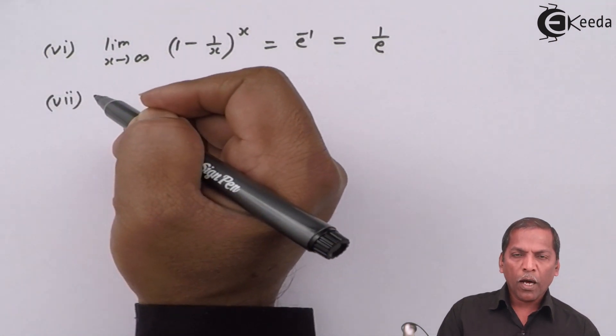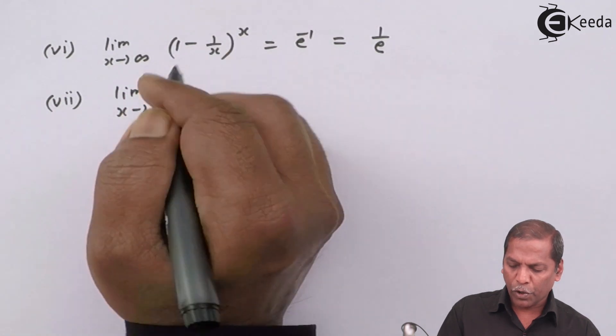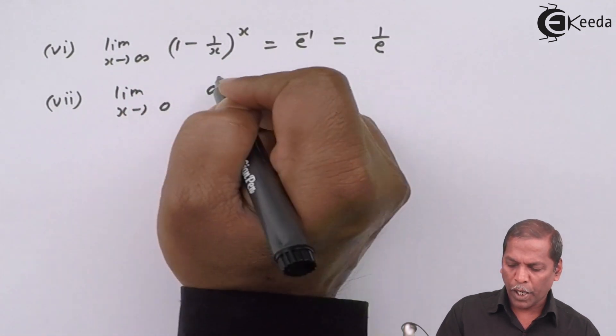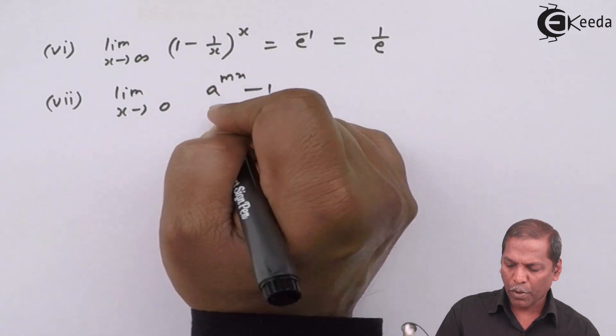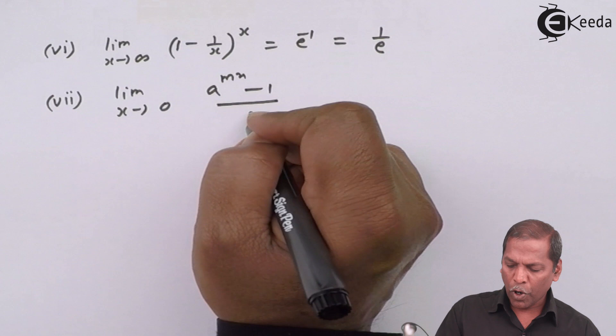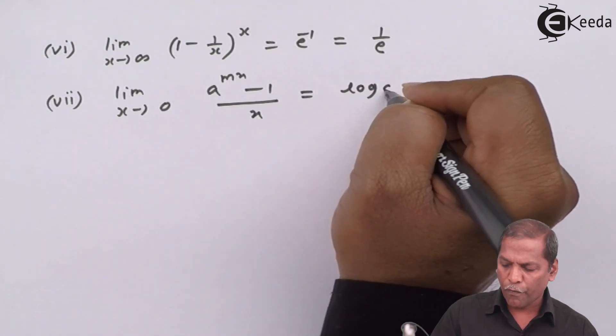Seventh formula is limit x tends to 0, a raised to mx minus 1 upon x, and that equals log of a raised to m.